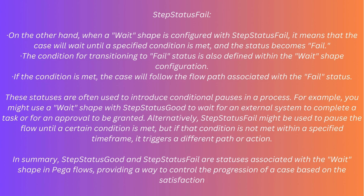These statuses are often used to introduce conditional pauses in a process. For example, you might use a Wait shape with Step Status Good to wait for an external system to complete a task or for an approval to be granted. Alternatively, Step Status Fail might be used to pause the flow until a certain condition is met, but if that condition is not met within a specified time frame, it triggers a different path or action. In summary, Step Status Good and Step Status Fail are statuses associated with the Wait shape in PEGA flows, providing a way to control the progression of a case based on condition satisfaction.